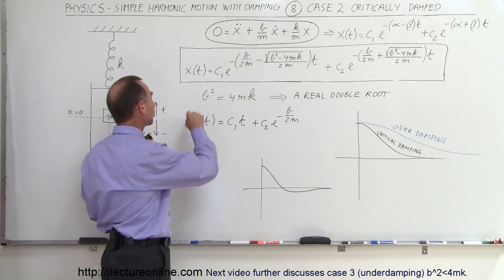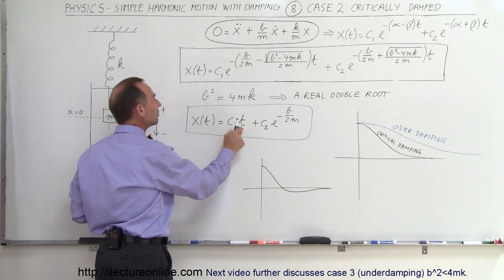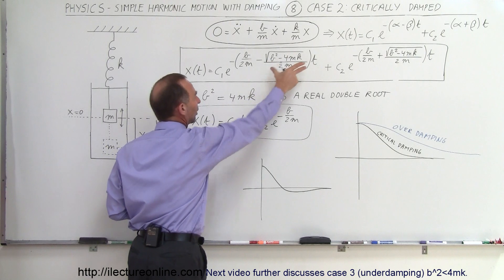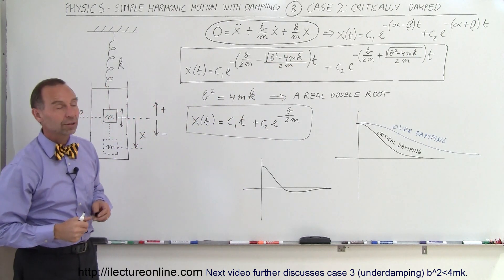But this is the general solution in this case and the reason why we have this c1t term is because of the fact that we have the double root. So that means that this equation collapses down to this equation to describe critical damping.